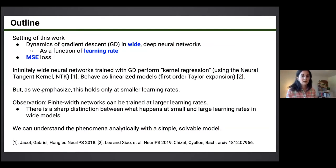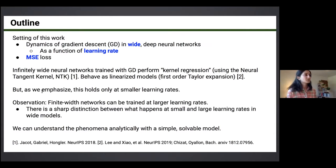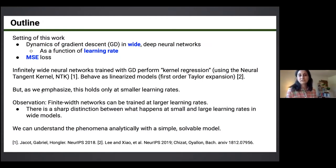If you do gradient descent in an infinitely wide neural network, you're essentially doing kernel regression. A kernel is a similarity map using features that are fixed rather than learned from data. There are very interesting results showing that neural networks in this limit behave like a kernel method with a specific choice of kernel. Another way to see it: the network behaves like a linear model — the thing you train is linear in the parameters, specifically a first-order Taylor expansion of the neural network about its initialization.